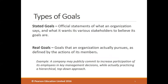The other two types of goals are stated goals and real goals. Stated goals are official statements of what an organization says it wants its stakeholders to believe. Stakeholders are any constituencies in the organization's environment — internal or external — affected by an organization's decisions and actions, including employees, suppliers, competitors, shareholders, and customers. Stated goals can be found in an organization's charter, annual reports, public relations announcements, or public statements made by managers.